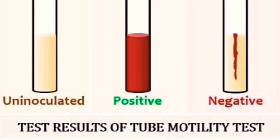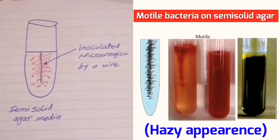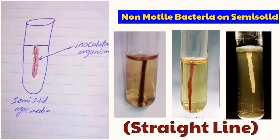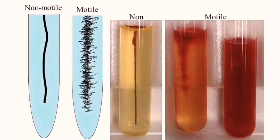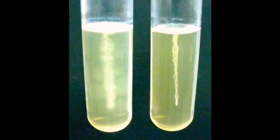A positive result gives a diffuse, hazy growth that spreads throughout the media from the site of inoculation, while a negative result shows growth only at the site of inoculation with no spreading in the media. Both results can be easily recognized by the naked eye.